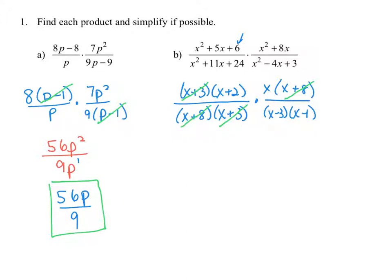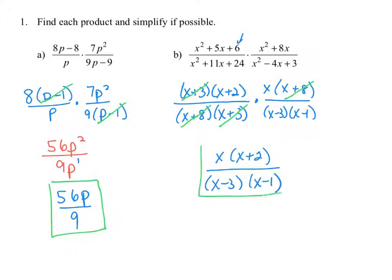The result when you simplify and multiply those rational expressions is x times the quantity x plus 2 in the numerator, and x minus 3 times x minus 1 in the denominator. It's common to leave that in factored form rather than trying to multiply it out.